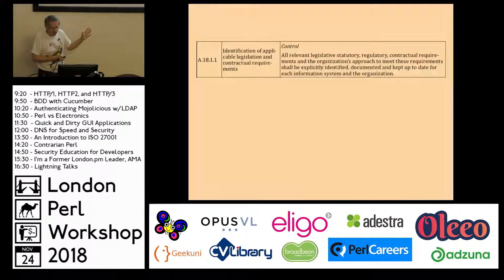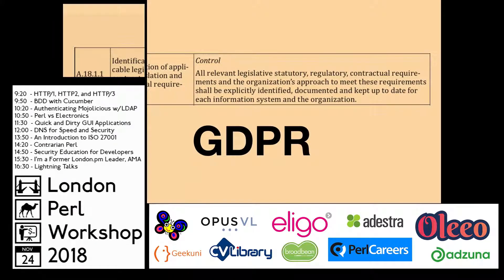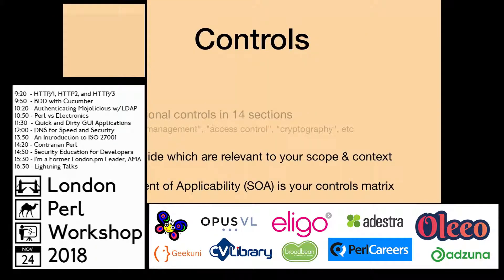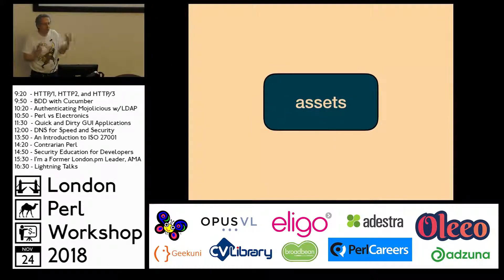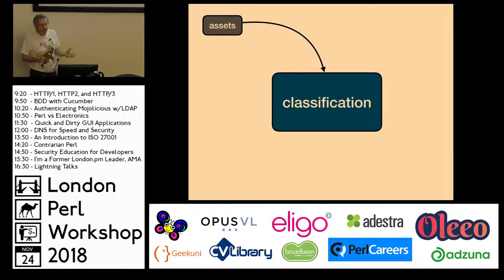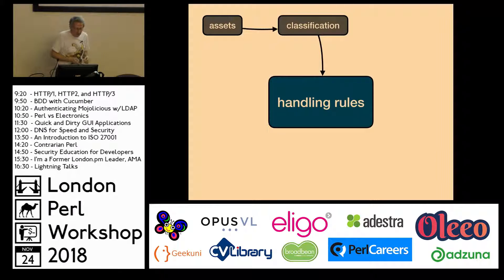This is an example of a controls section — you can see the kind of thing that's in there. Your information assets — your username details, your SSL certificates, your encryption keys, all the things that are information assets — you've got to work out a classification scheme: which fits 'public', which fits 'semi-public', which fits 'very confidential'.